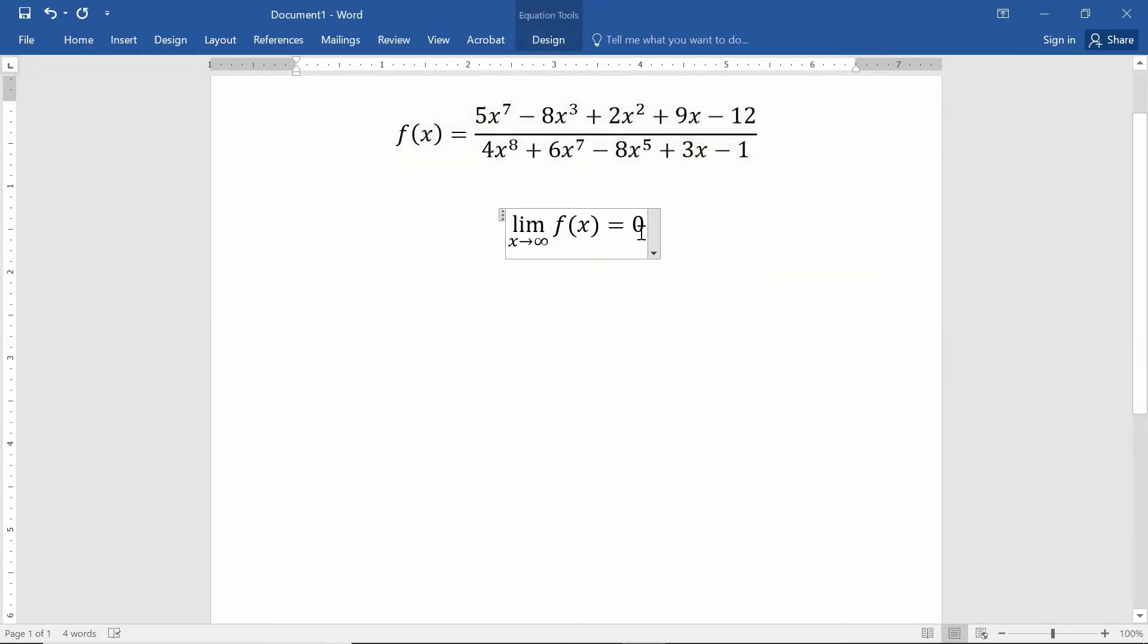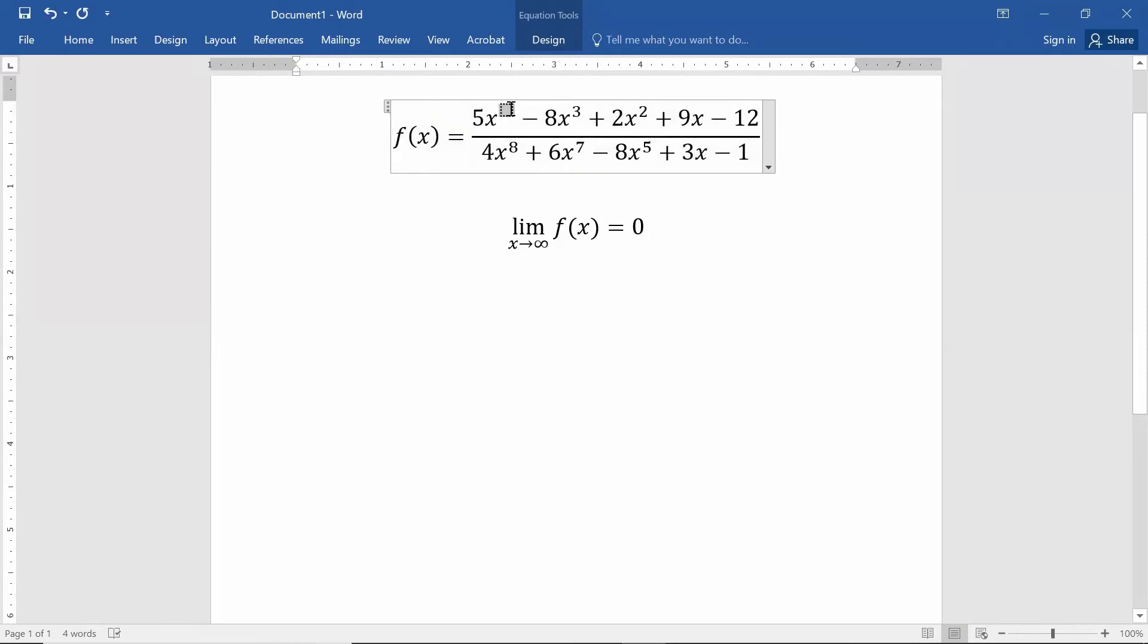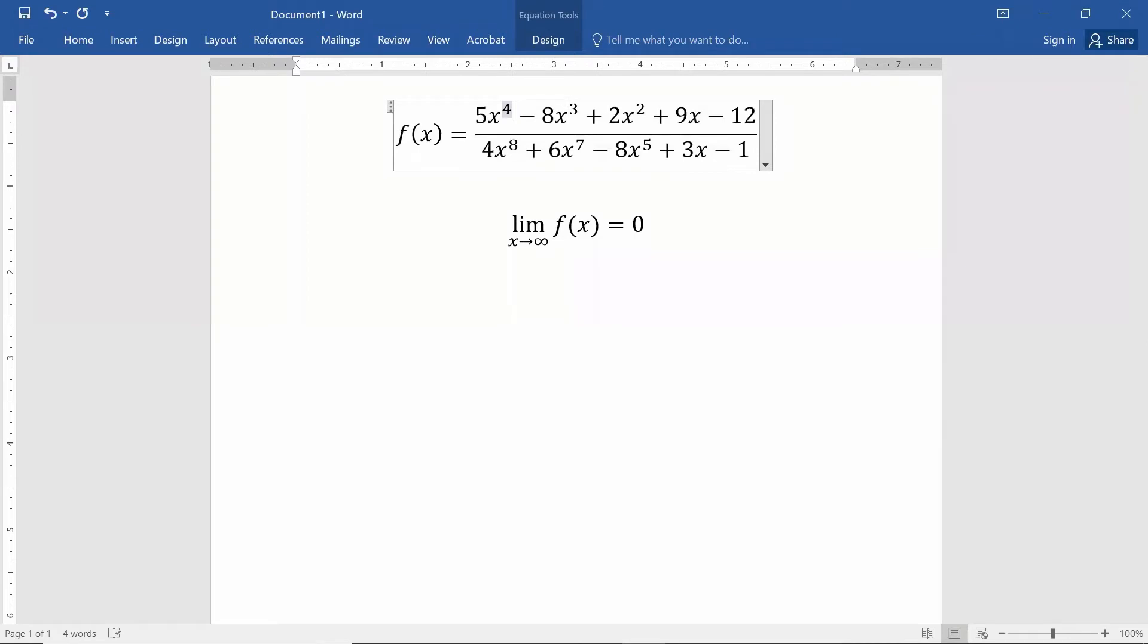By the way, this would have also worked the same way, no matter how much smaller. So if this were a degree four polynomial on top, it would work in the exact same manner. As long as it's a smaller degree, it doesn't matter how much smaller the degree is, as long as it's smaller.